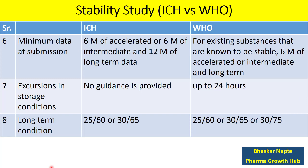The next point is the long-term condition. If the drug substance or drug product is intended to be stored at room temperature, according to ICH guidelines, you can select either 25°C/60% RH or 30°C/65% RH. However, according to WHO, there are three different long-term conditions possible: 25°C/60% RH, 30°C/65% RH, or 30°C/75% RH.